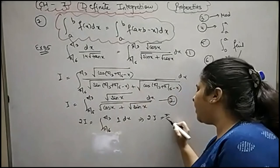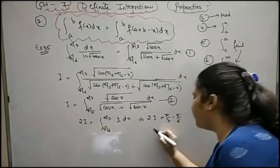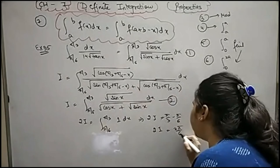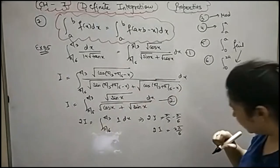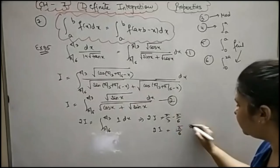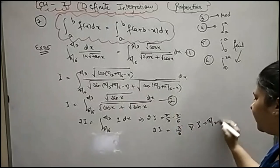Then same: upper limit minus lower limit. 2I is equal to 2 π/6. This will happen. 2 π/6, no—only π/6. So I's value is π/12. Answer.